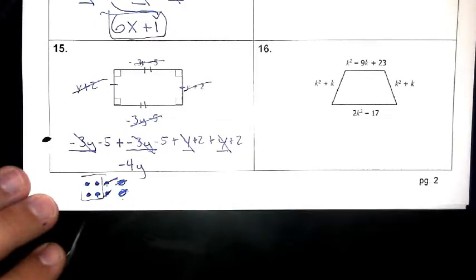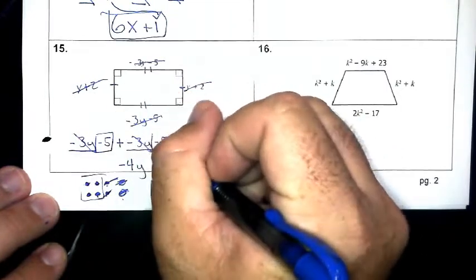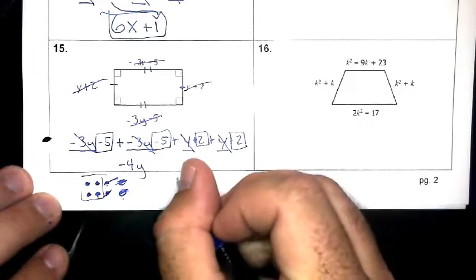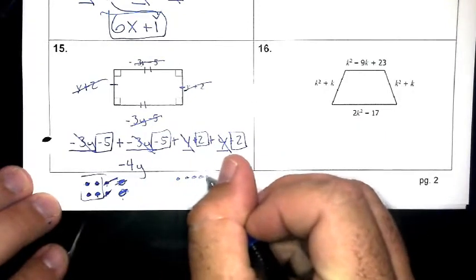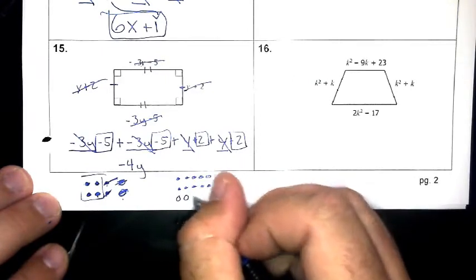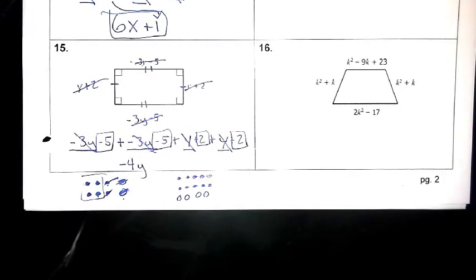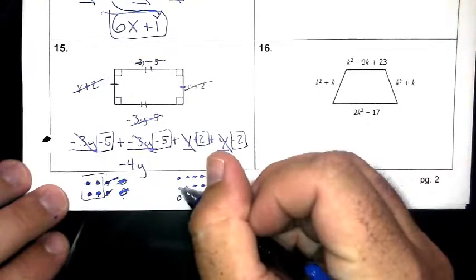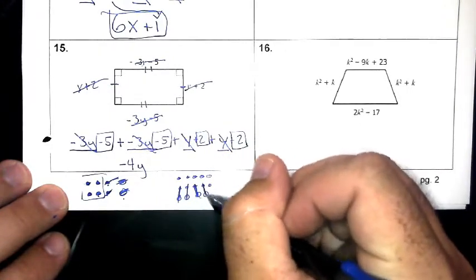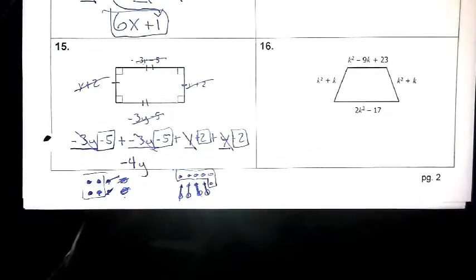Now I have the constants left over. I have five negative ones, five negative ones, one positive, and one positive. These cancel each other out, and I'm left with negative 6 for my constants.